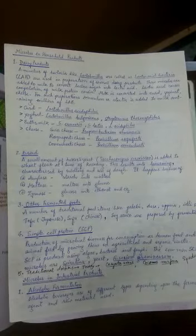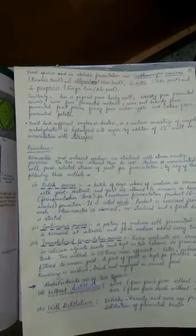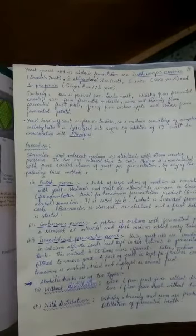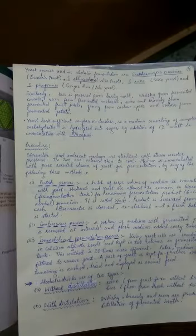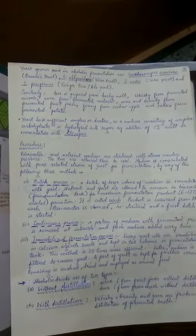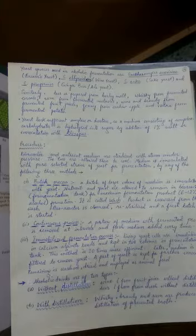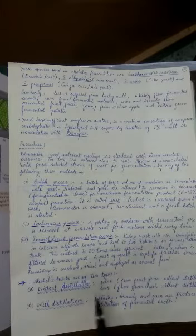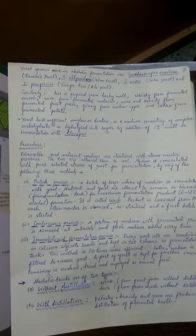We started the topic of microbes in industrial products and talked about alcoholic fermentation — how the same yeast called baker's yeast is also used in fermentation to prepare alcohol, which is why it is also called brewer's yeast. There are various species of Saccharomyces responsible for different flavors: wine yeast, sake yeast, and ginger beer yeast are all different. There are two types of alcoholic beverages: distilled and non-distilled. Distilled ones are concentrated — whiskey, brandy, and rum all have a higher percentage of alcohol.